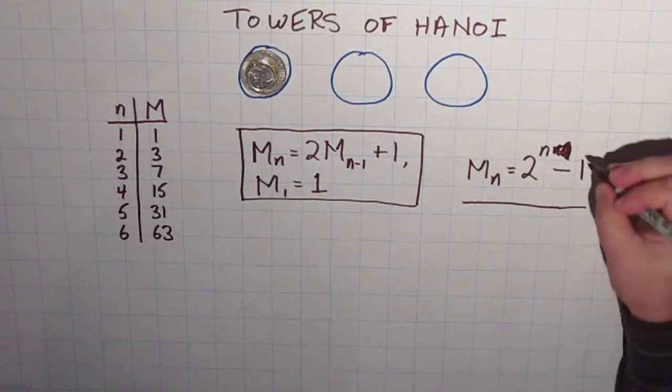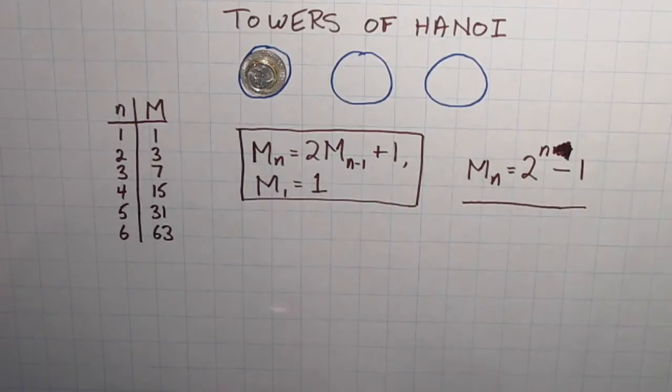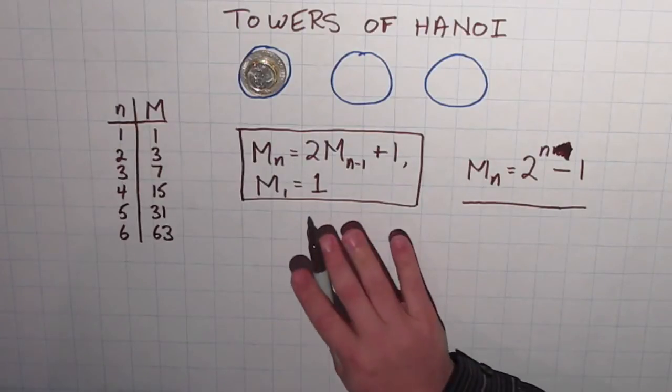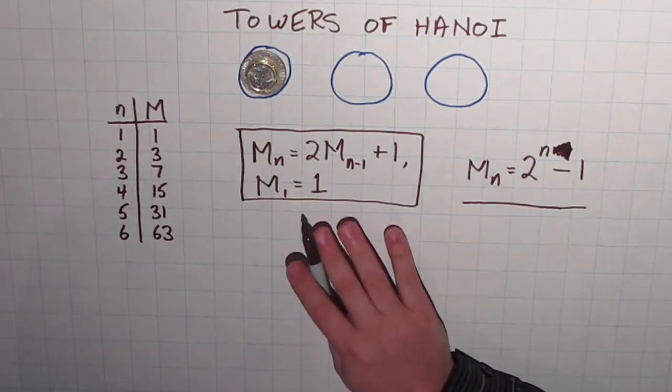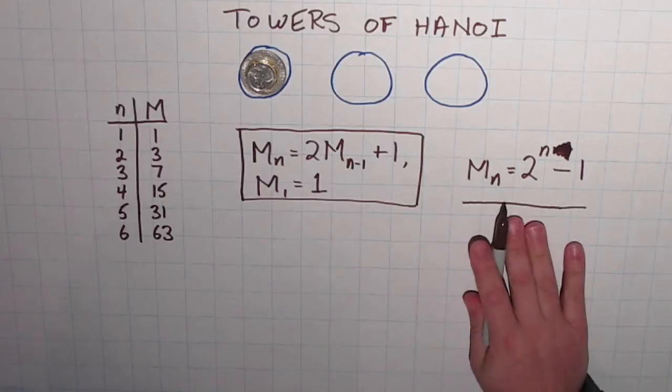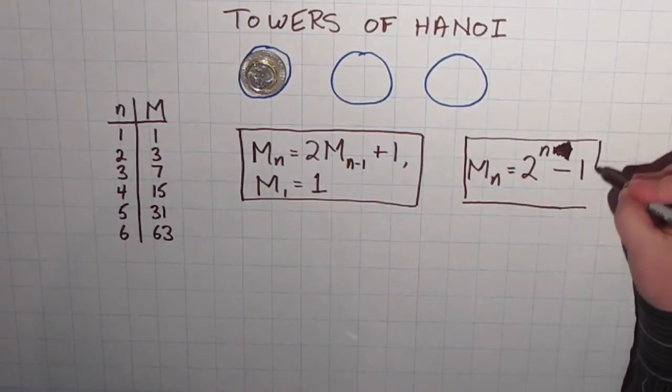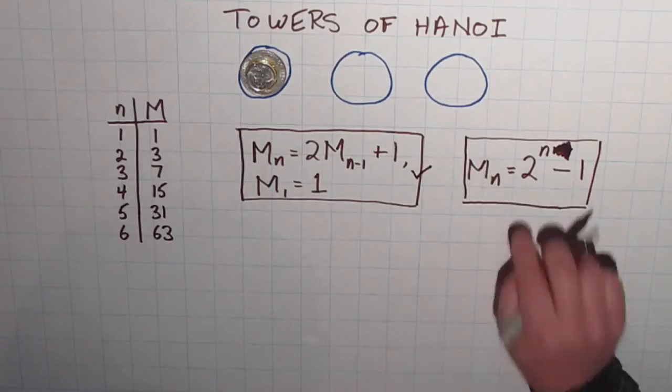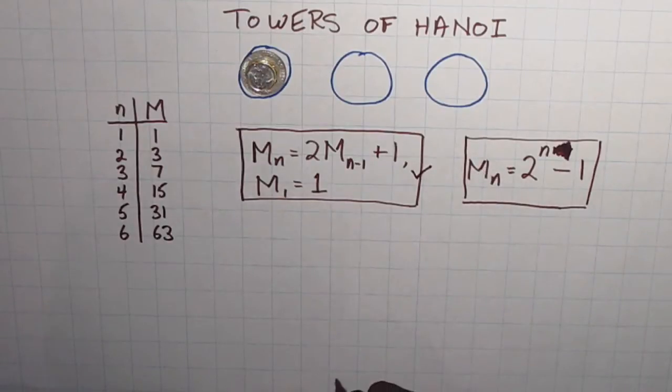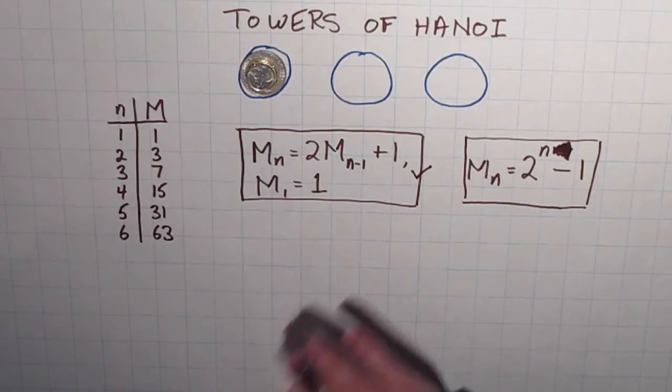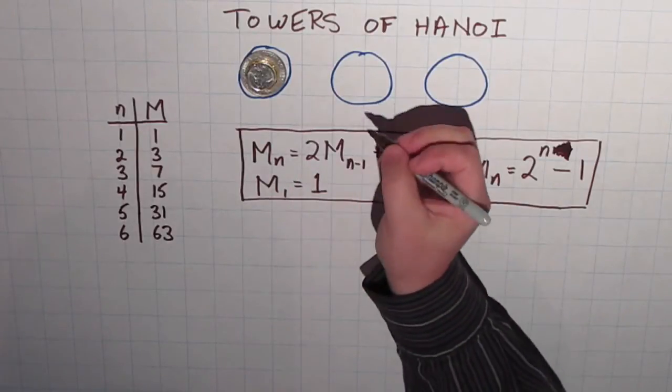But we never proved it. And what we want to do is prove this formula. We want to prove that this formula works all the time. Now we do know that this formula works. So basically, I want to connect these two together. I want to connect this formula that I know works, for a fact, to this formula that I would like to prove works all the time, for all possible values, at least all the natural numbers.